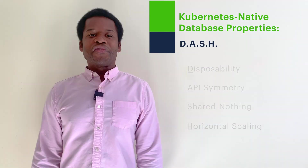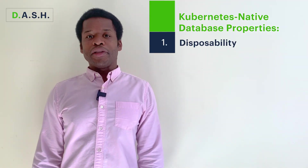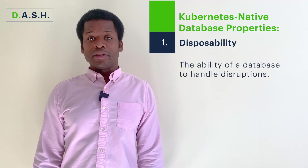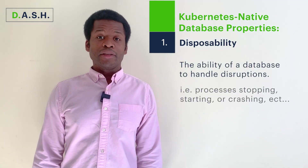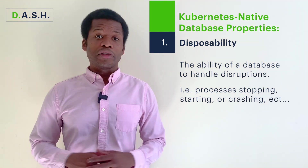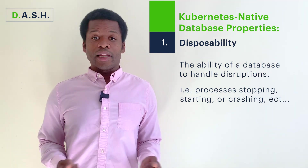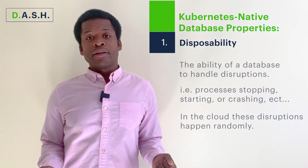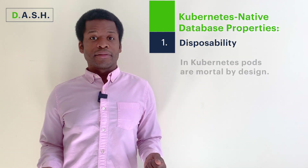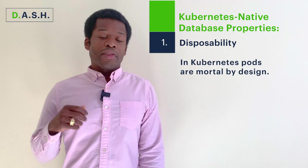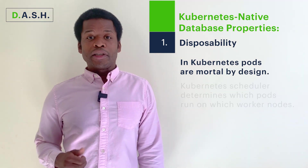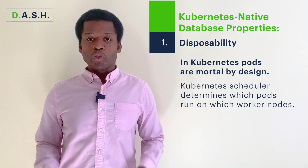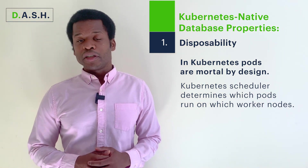Now onto the first property: disposability, which is the ability of a database to handle disruptions, such as processes stopping, starting, or crashing with little to no notice. In the cloud, these disruptions happen randomly. In Kubernetes, pods are mortal by design. This property is important because of the Kubernetes scheduler, which determines which pods run on which worker nodes, based on a configurable set of rules.